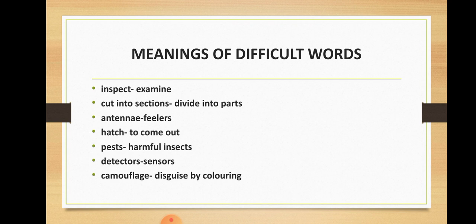Here are the meanings of difficult words: 'Inspect' means to examine closely — to study something very closely. 'Cut into sections' means divide into parts. Antennae are the feelers, detectors, or sensors. 'Hatch' means to come out from an egg. 'Pest' means a harmful insect. 'Detectors' are sensors or radars. 'Camouflage' means disguised by coloring — the ability to change color and adopt the color of the environment to avoid danger.